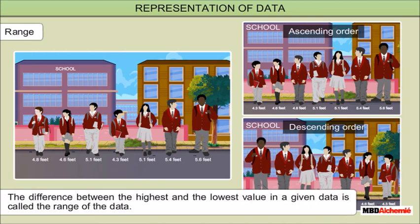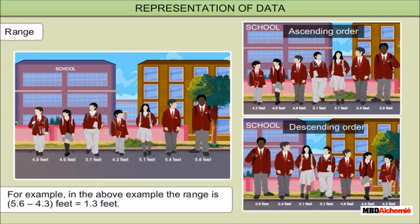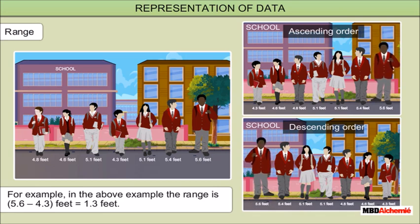Range: the difference between the highest and the lowest value in a given data is called the range of the data. For example, in the above example, the range is 5.6 minus 4.3 feet, which is equal to 1.3 feet.